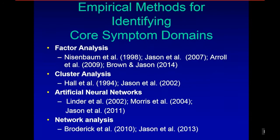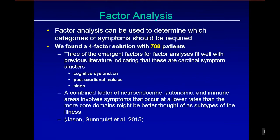There are a number of empirical methods for identifying core symptoms, ranging from factor analysis to cluster analysis, artificial neural networks to network analyses and others. Factor analysis can determine which categories of symptoms should be required. We found a four-factor solution with 788 patients — our most recent work is over a thousand patients — and we consistently find three factors: cognitive dysfunction, post-exertional malaise, sleep, and a combined factor of neuroendocrine, autonomic, and immune areas. Symptoms that occur at lower rates than the core symptoms might be better thought of as subtypes of the illness.